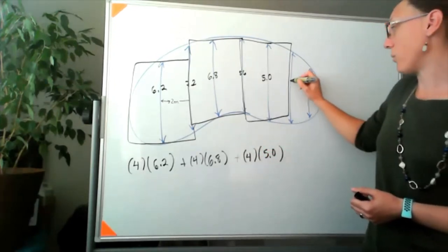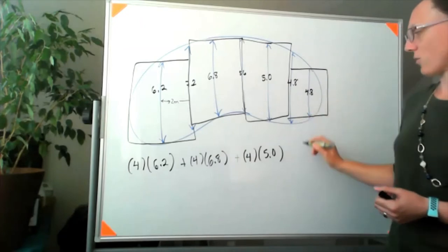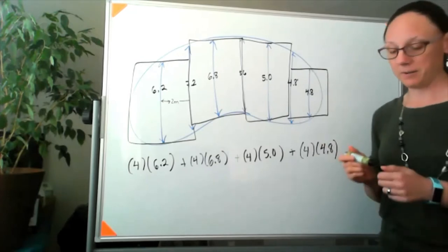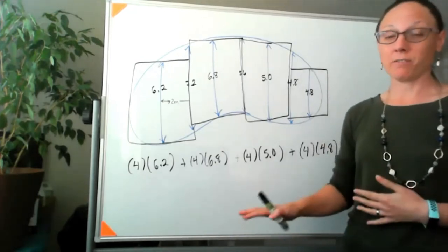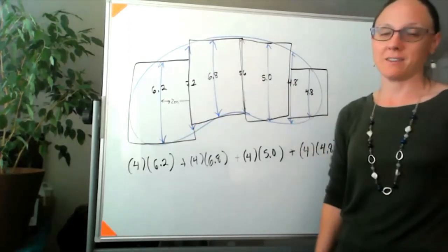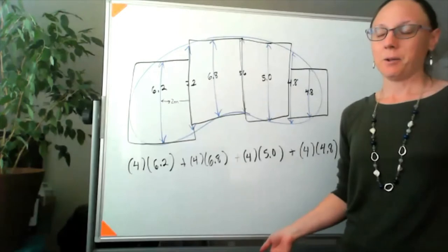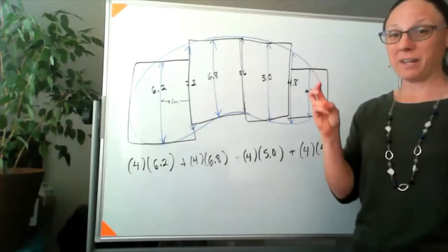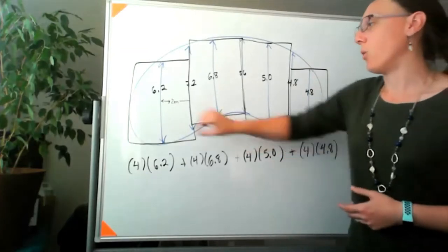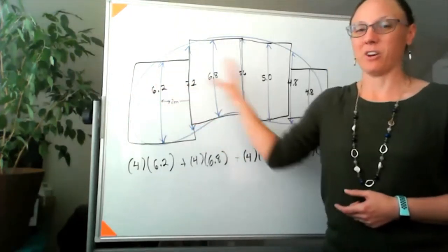We're not going to use this 4.8 that they gave us, but we will use this one to draw our last rectangle here, which has a width of 4 and a height of 4.8. Most of the problems in this section I think are dumb because if we took the time to actually make these measurements in person, we would never then go back and throw out half of the data. But to illustrate the midpoint rule: we're only going to use the middle value in each interval to make an estimate over the entire interval.